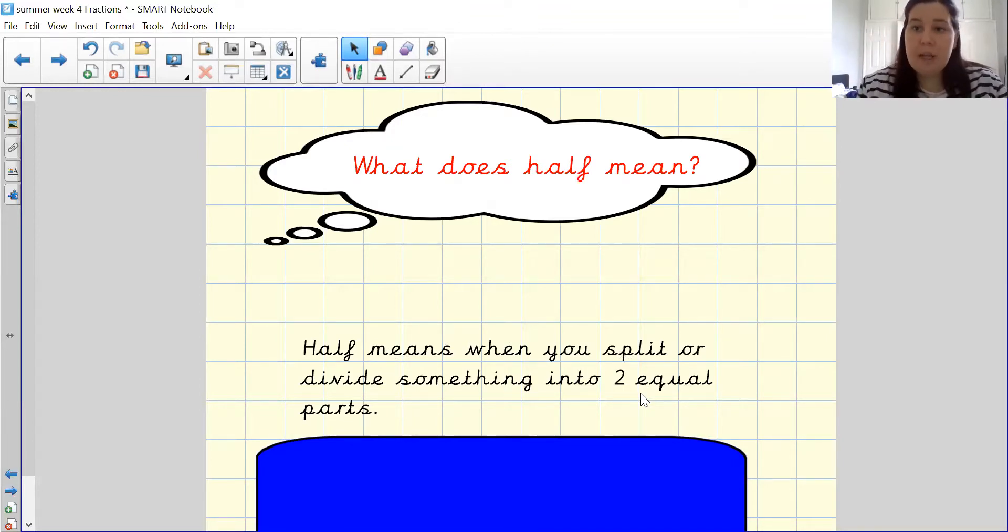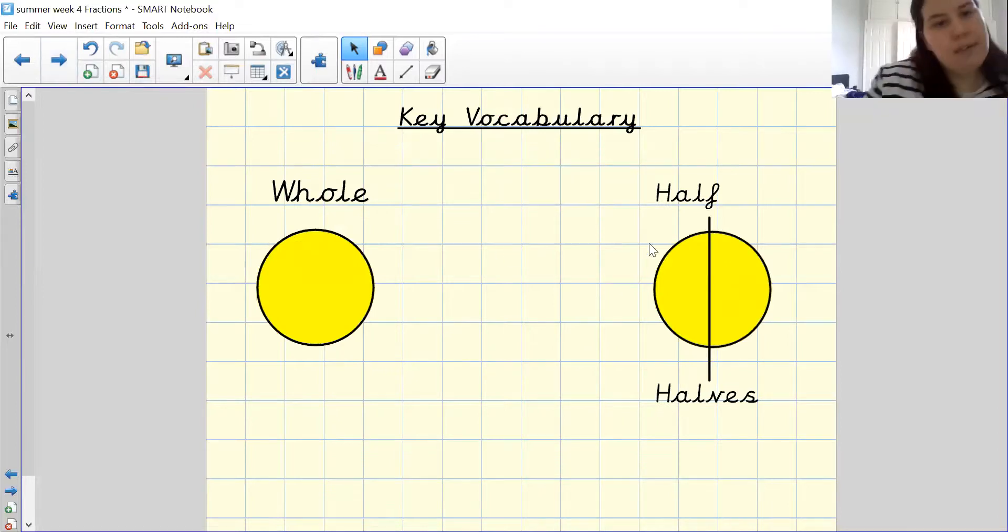How many parts? Two equal parts, well done. So if I were to show you some key vocabulary for today, the words we are looking at is whole - whole means everything in that circle or square or any shape. Half, well done, and that means when you put something into two equal parts.